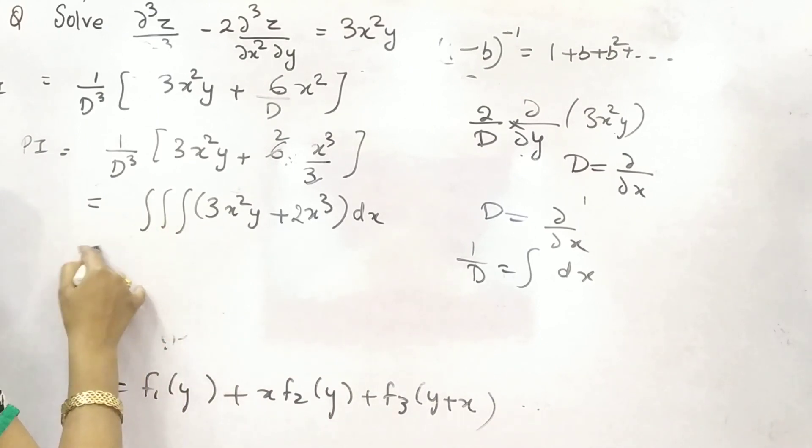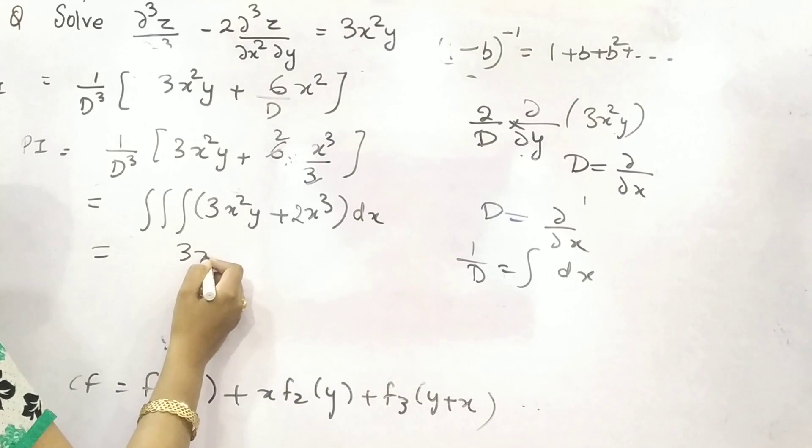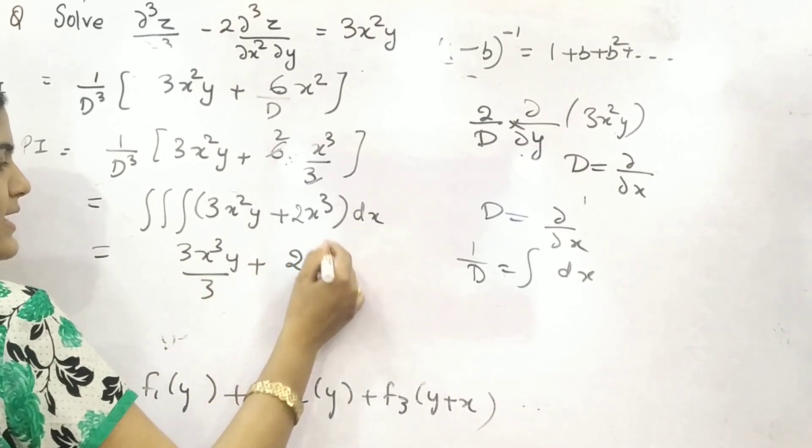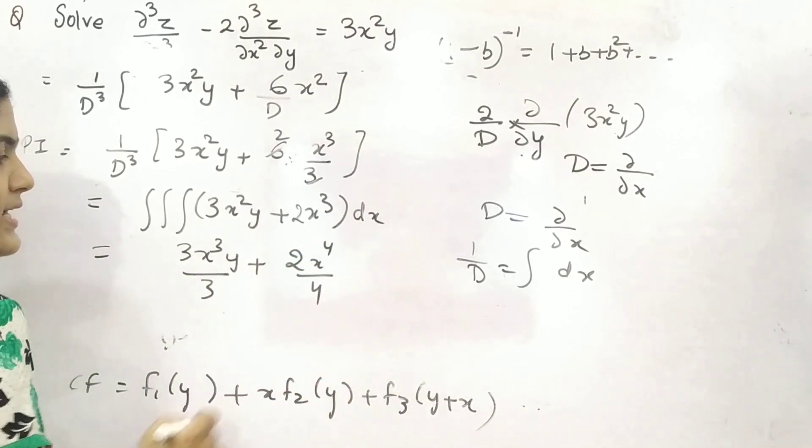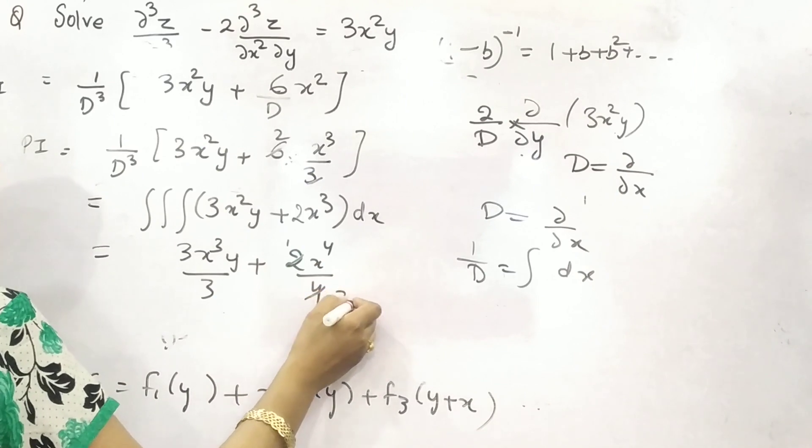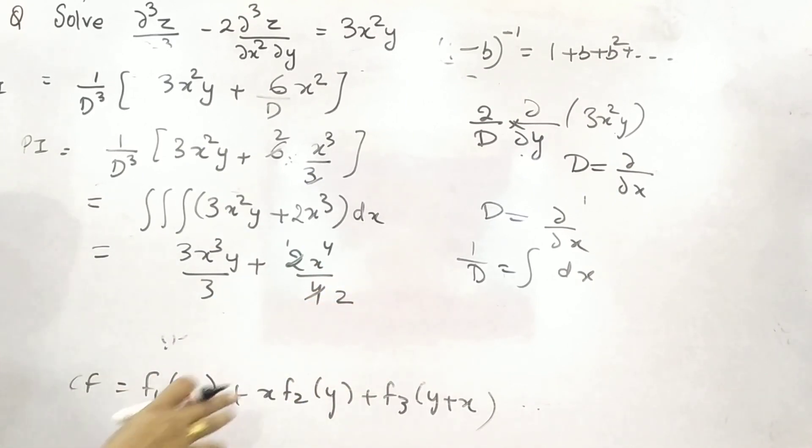So, now, integrate it thrice. Firstly, 3x³y is constant, because you are doing it with respect to x, by 3, 2x⁴/4. So, 2 times 2 is this.